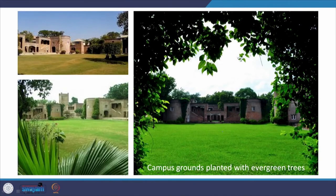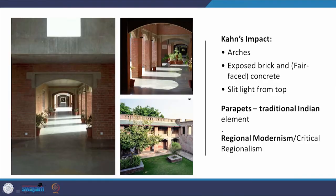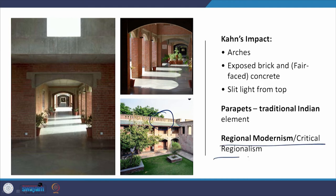Here the campus grounds are planted with evergreen trees — again something already there in traditional Indian architecture. Most of these architects relied heavily on green areas to build passive climate features into the building. Kahn's impact is seen in the arches, the exposed brick and concrete, and the slit light coming from the top. But the parapets here are traditionally Indian — this is part of the regional modernist context. Bimal Patel adds this identity, so regional modernism or critical regionalism.